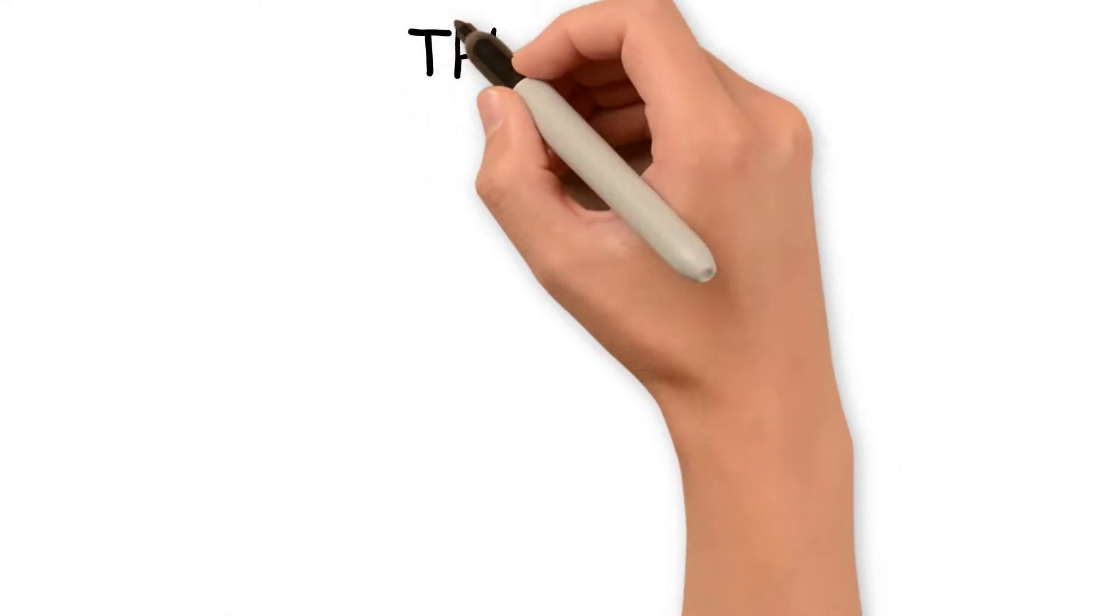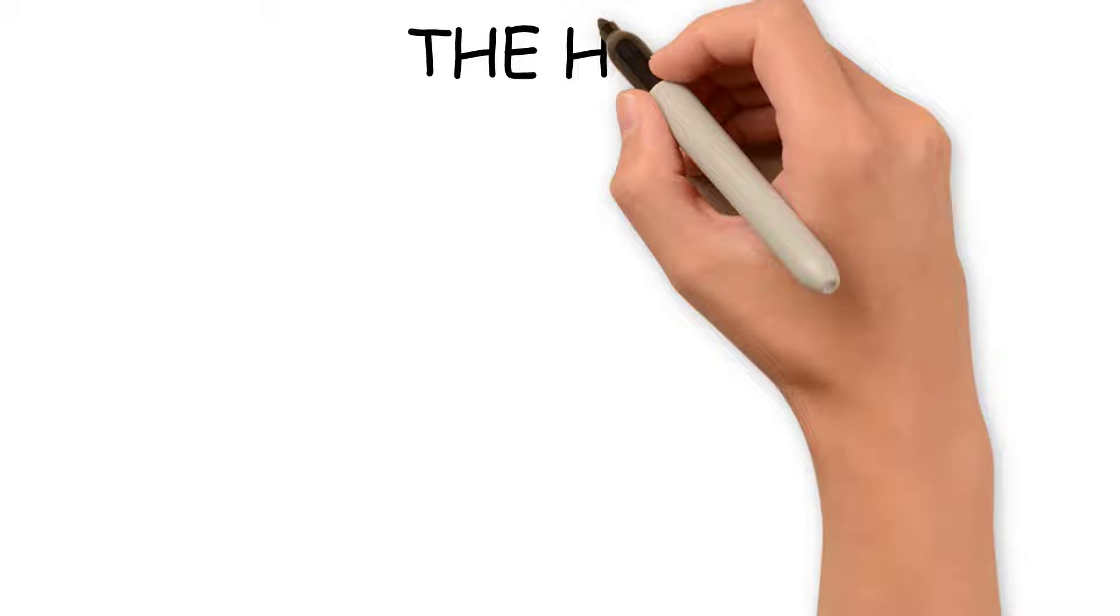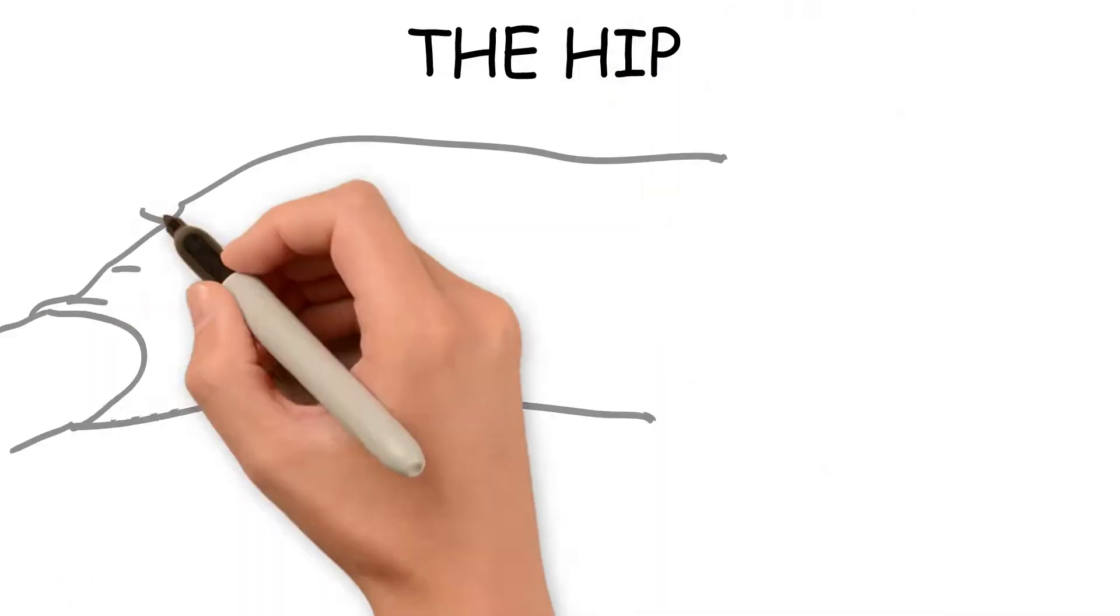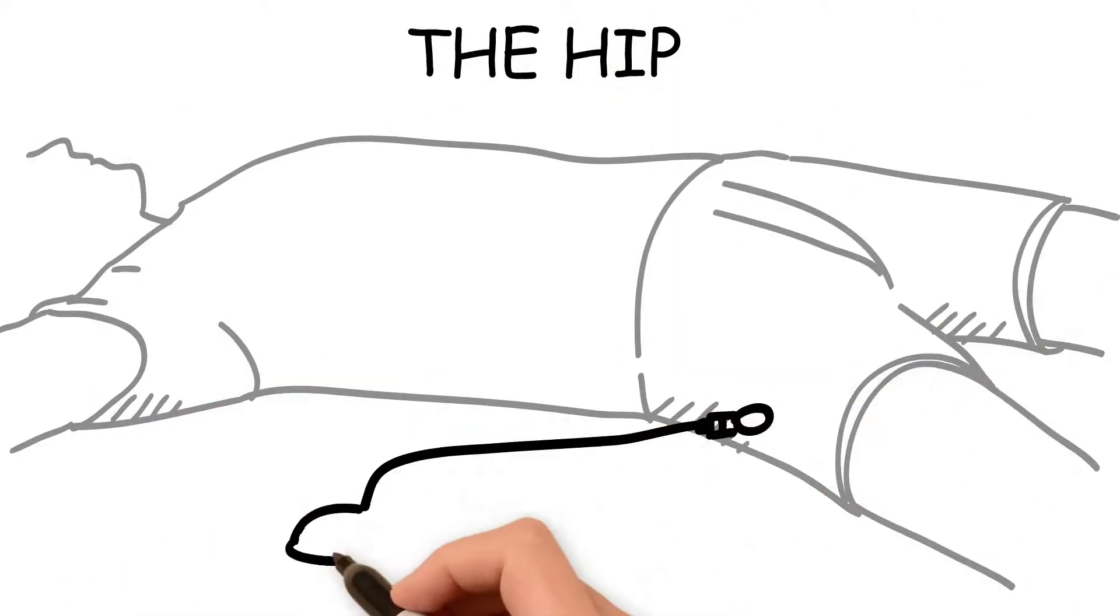AP hip: Place the calibration sphere at the vertical height, bone level, of the greater trochanter on the lateral side of the hip. This is the same position as the previous placement for the pelvis.